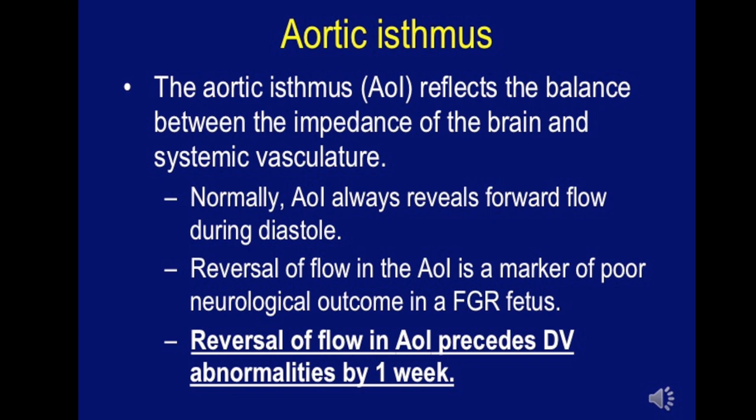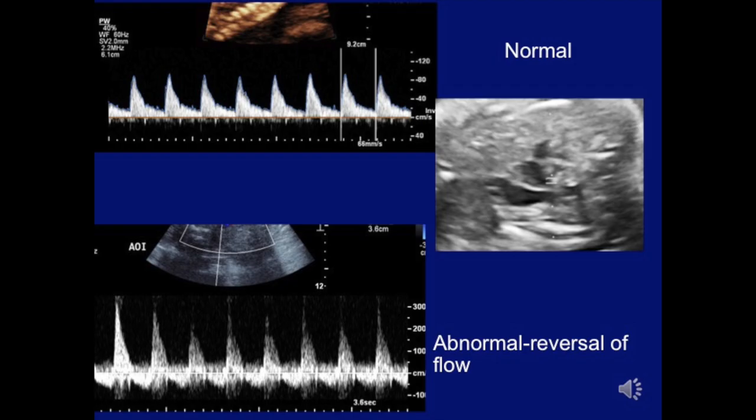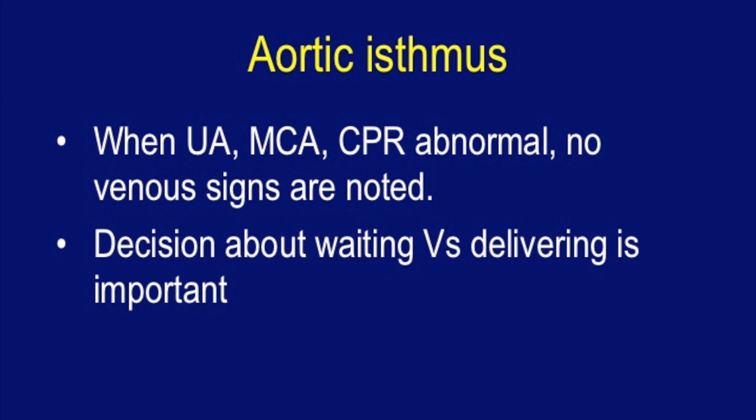The aortic isthmus is important because reversal of flow there precedes ductus venosus abnormalities by approximately one week. It always has forward flow during diastole normally, and reversal is a marker of poor neurological outcome in an FGR fetus. It is assessed in a three-vessel trachea view where the pulse Doppler is placed on the aortic isthmus. Normal findings show forward diastolic flow; an abnormal fetus shows reversal of flow. However, surrounding structure overlap makes this a difficult vessel to insonate, and it becomes particularly important when deciding between waiting versus delivering.